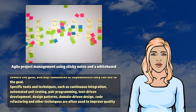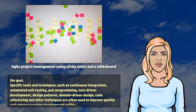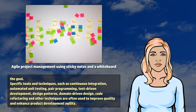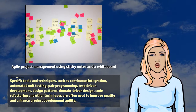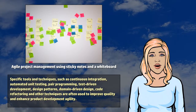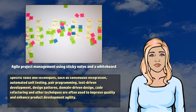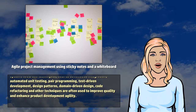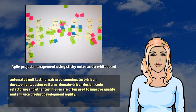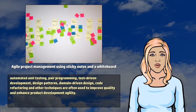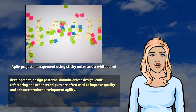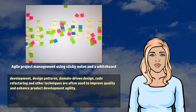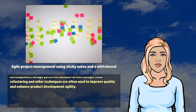Specific tools and techniques, such as continuous integration, automated unit testing, bare programming, test-driven development, design patterns, domain-driven design, code refactoring, and other techniques are often used to improve quality and enhance product development agility.